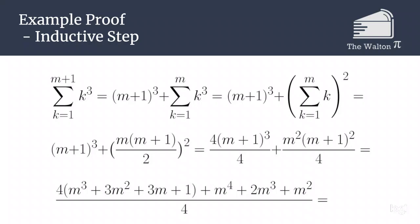From a previous example that we did on this channel that you can watch if you would like to, we can replace the sum from k equals 1 to m of k with m times m plus 1 all over 2. So we now have m plus 1 cubed plus m times m plus 1 all over 2 all squared.